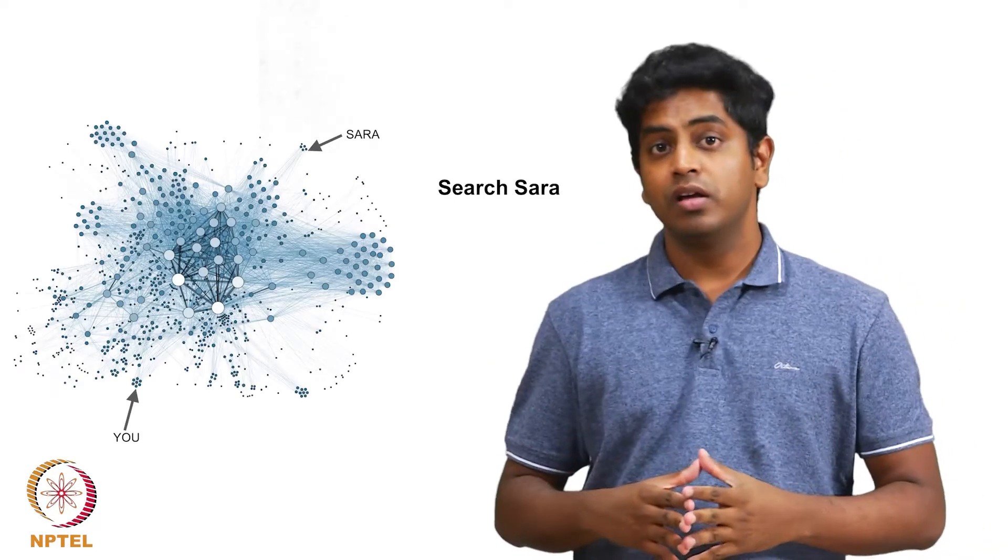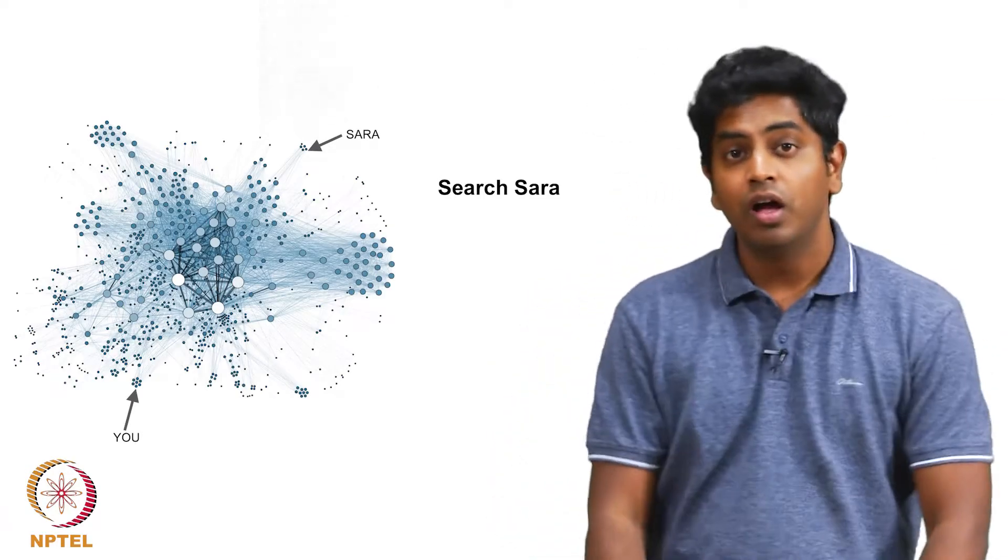Second in the list is the problem of searching in a network. In a network with roughly, let's say, 1 billion nodes, if I were to tell you to search for a particular node starting from some random node, how will you even start? Can this even be solved?